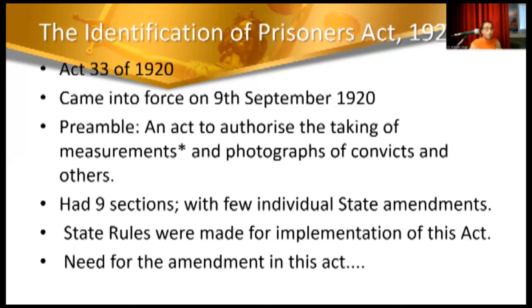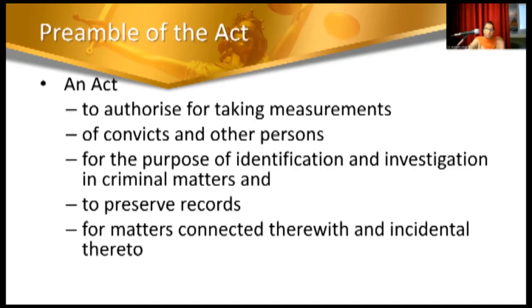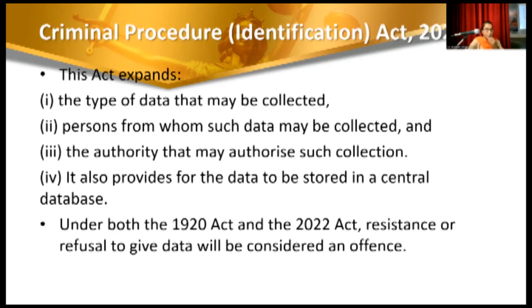If we have physical evidence but cannot compare it with the personal uniqueness obtained from measurements taken from criminals, we need the legal authorization to take those samples and compare them with physical evidence. Because of that gap, conviction rates were not high. This led to the new act, which was introduced on the 28th, passed and given assent on 18th April, and it repealed the earlier act. Instead of going section by section, I'll go through the key differences.